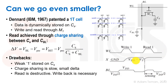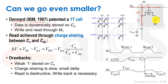Let's review the 1T1C cell, invented by Robert Denard and patented at IBM in 1967. It uses the same word line and bit line crossbar structure, with a single cell serving as both read and write access port. To write, we turn on the word line and pass either VDD or ground to the capacitor, charging it to either 0 or approximately VDD minus VT.